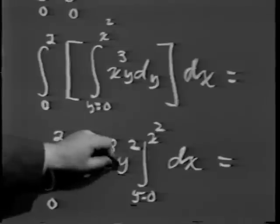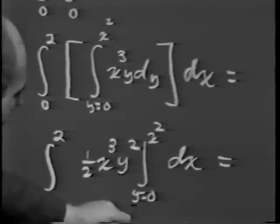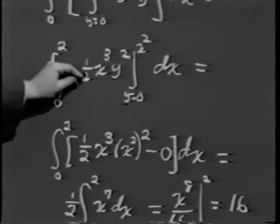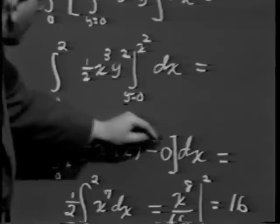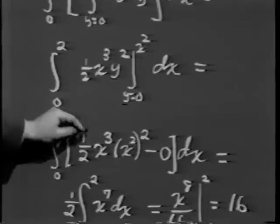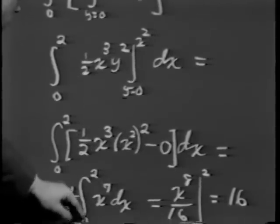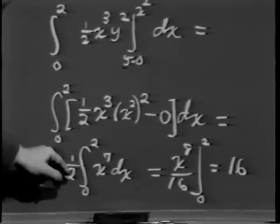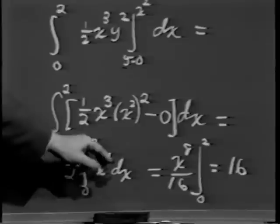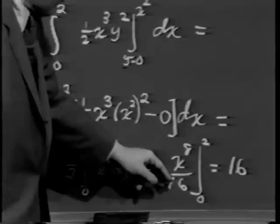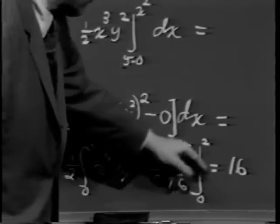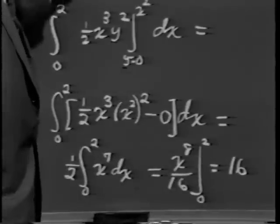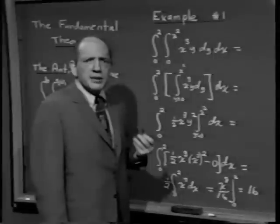When I replace y by the upper limit, I get ½ x³ times (x²)². When I replace y by the lower limit 0, the integrand vanishes. So what I wind up with is a function of x alone — specifically, ½ x⁷. I now integrate that from 0 to 2. That gives me x⁸/16 evaluated between 0 and 2. 2⁸ over 16 is 2⁸ over 2⁴, which is 2⁴, which is 16.